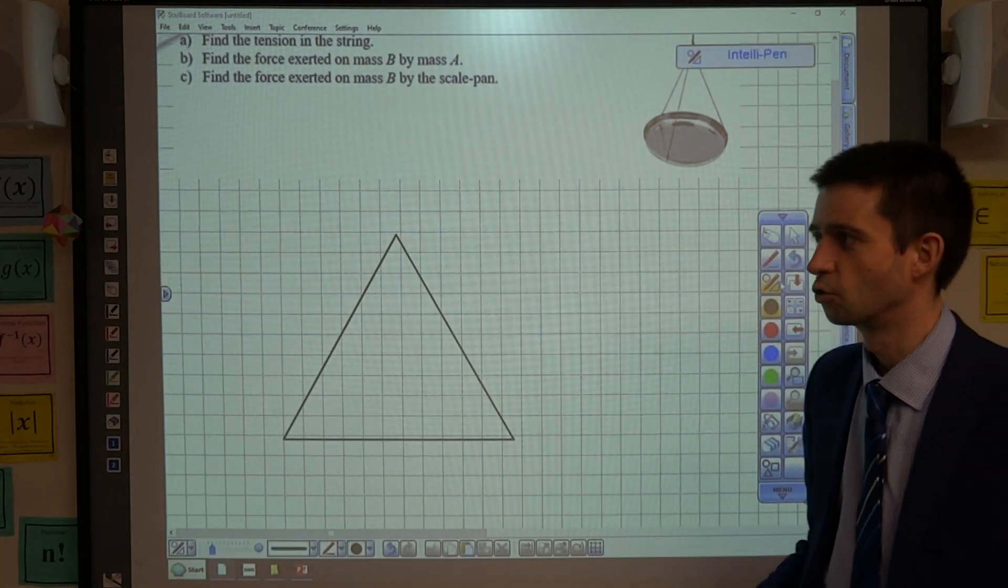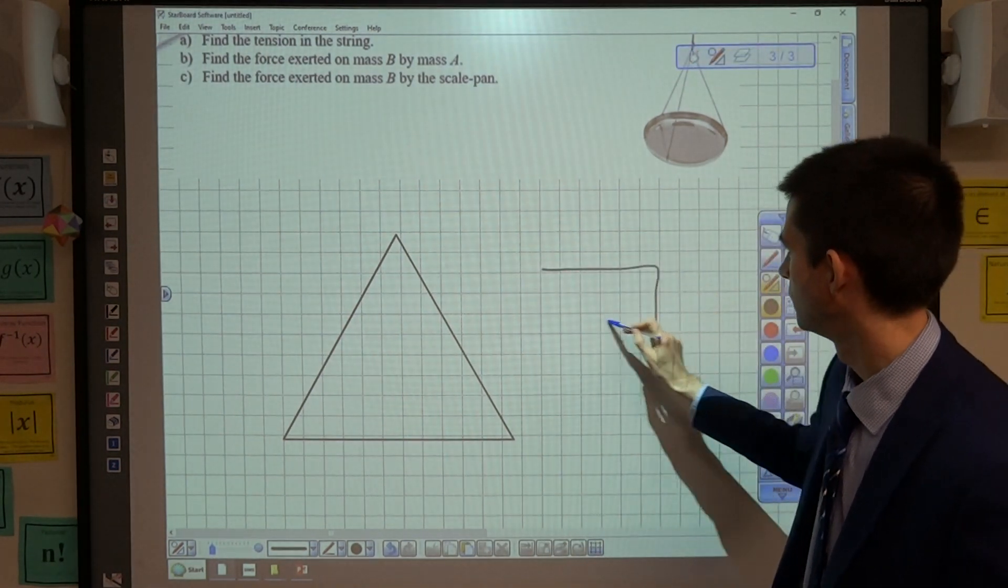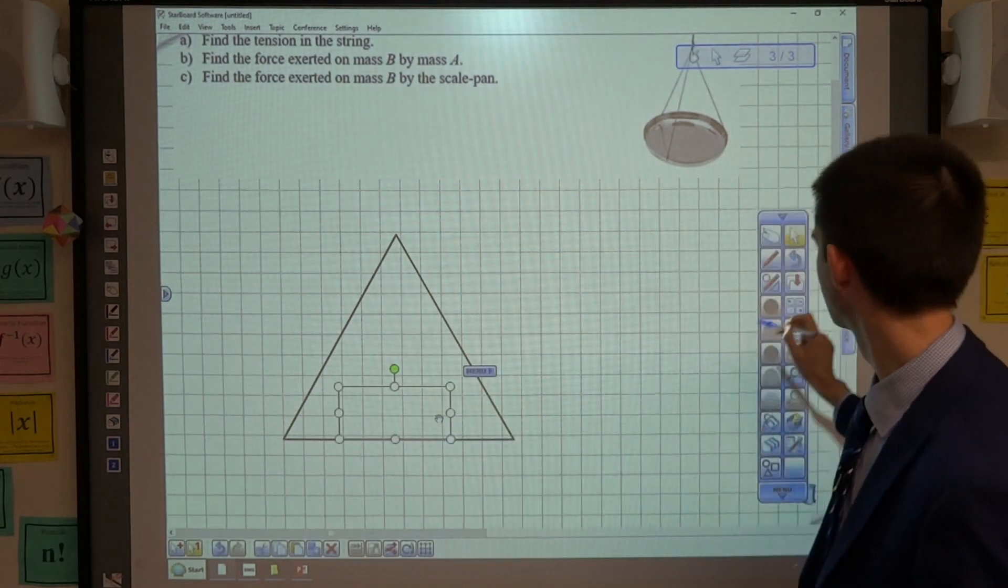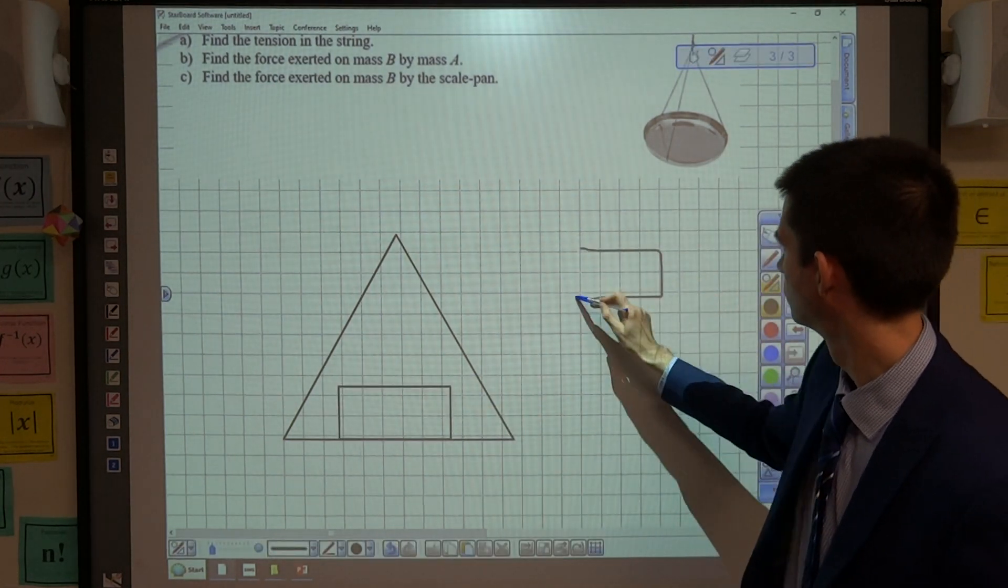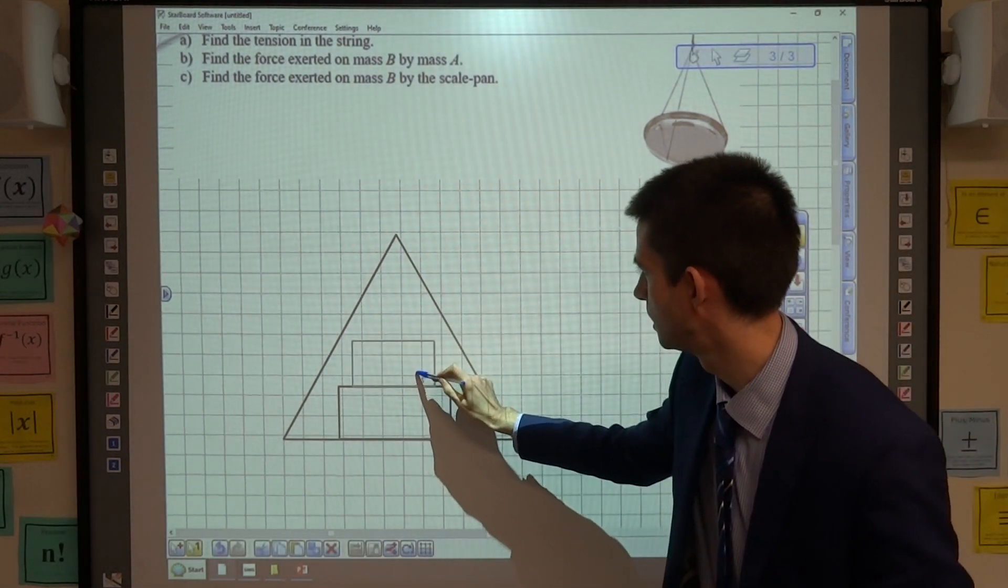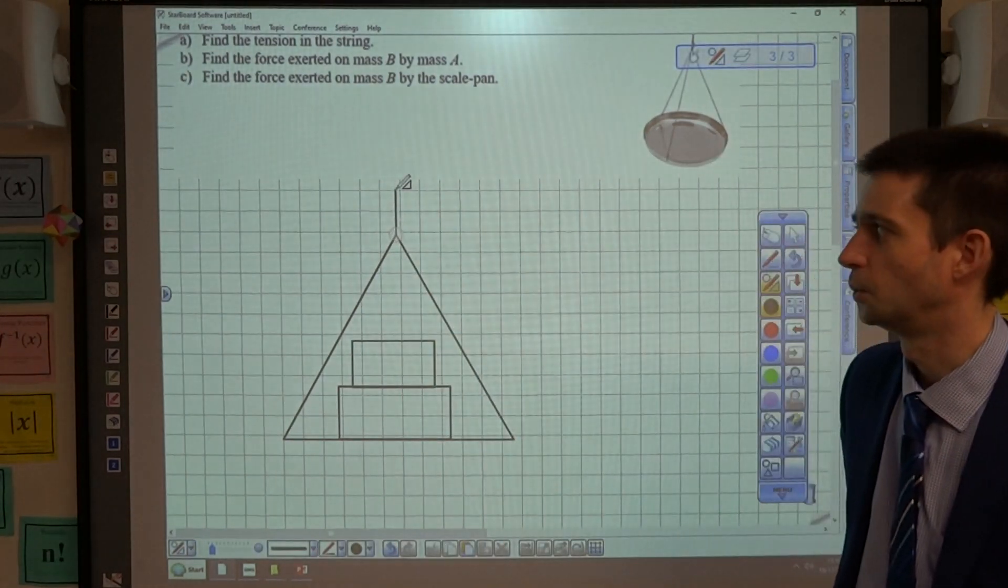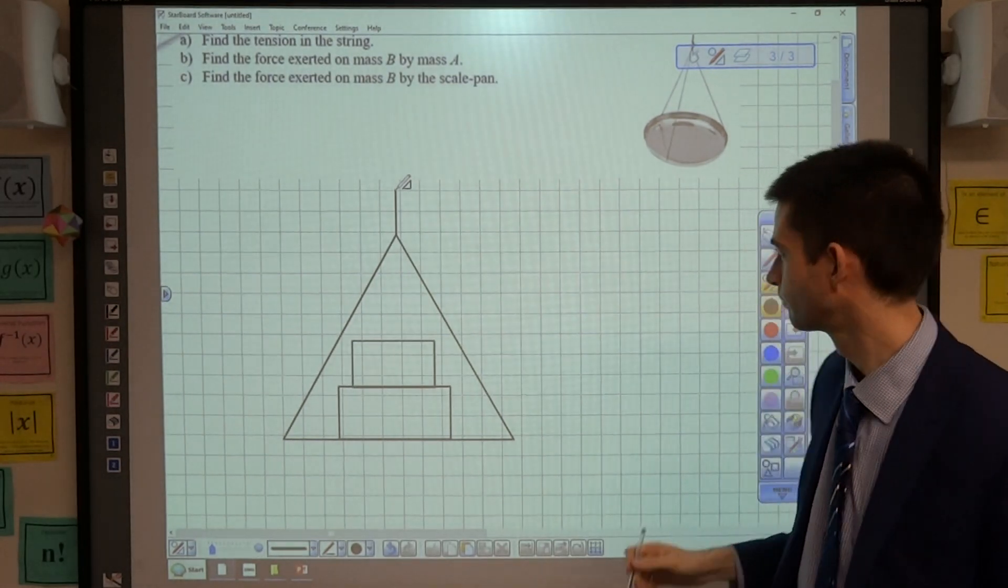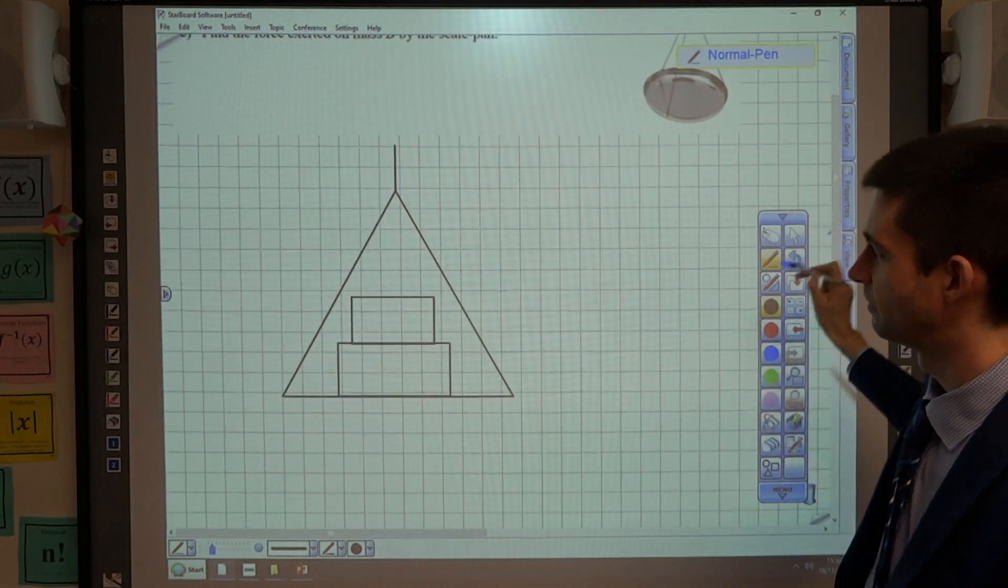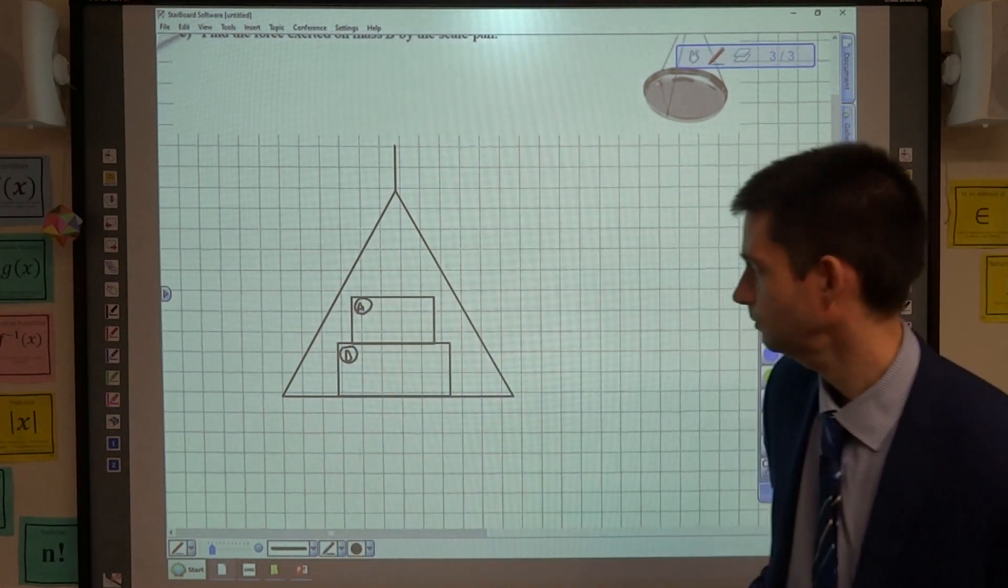And I'm going to draw two masses and this is A and B. So that can be mass B. And that can be mass A. And then we have a vertical string that is holding up the scale pan. And it says mass A rests on top of mass B. So this is mass A and this is mass B.